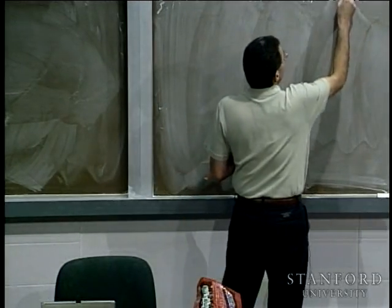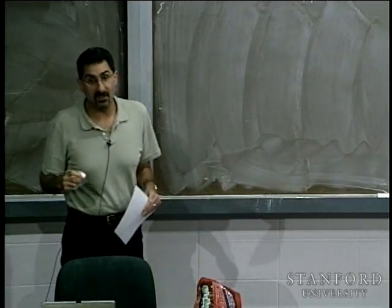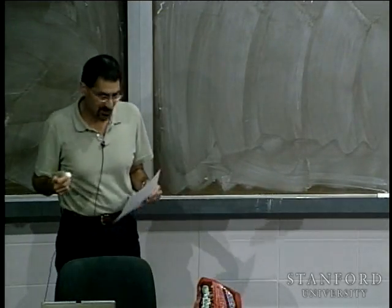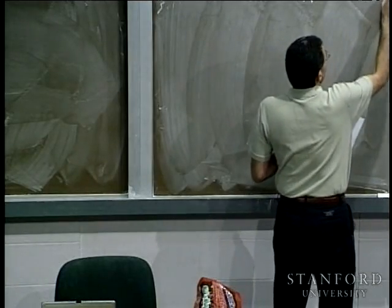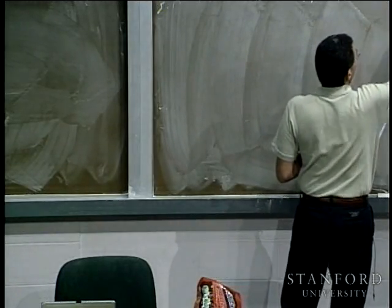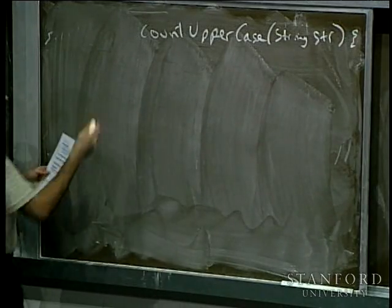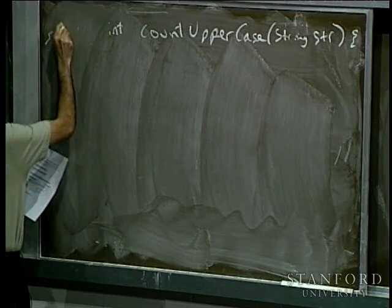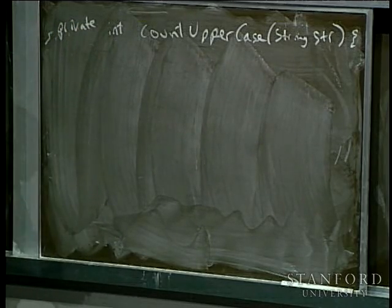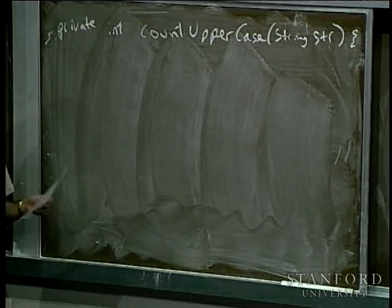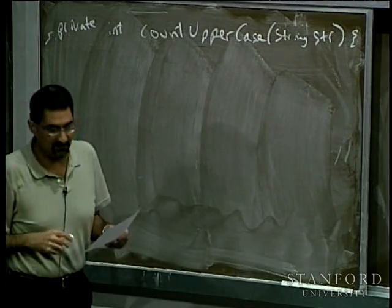This is a function I've given to you in one of the handouts, so you don't need to worry about jotting down all the code quickly, but you might want to pay close attention. What this does is it gets passed some string str, and it's going to count how many uppercase characters are in that string. So it's going to return an int. We'll call this private.